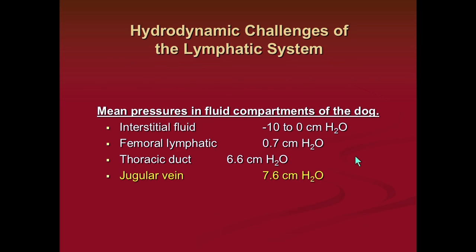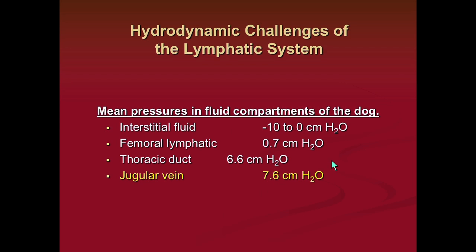Once you've got lymph formed, how do you actually move it? Lymph is formed from initial interstitial fluid where, as Dr. Roxton alluded to, pressure in many tissues of the body is slightly negative, sometimes slightly positive in compartmentalized organs. You have to take it from those initial lymphatic capillaries where the pressure is very low — plus or minus a couple centimeters of water — and move it all the way up to the great veins of the neck where the pressure, oscillating with cardiac pulsations and respiration, averages just under 10 centimeters of water positive. So you've got to move it against this pressure gradient.